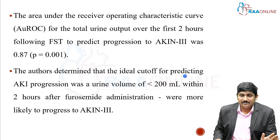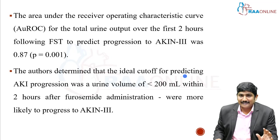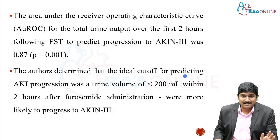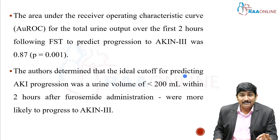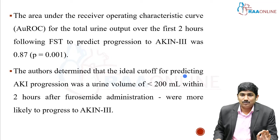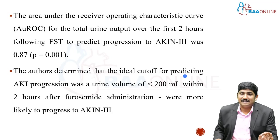In practice: when you identify AKI — in the ER, ward, or ICU — and want to know whether the nephron units are intact, perform the FST with adequate hydration. If the patient has not received furosemide in the past seven days, give 1 mg/kg IV bolus; if they have, give 1.5 mg/kg IV bolus. Ensure the patient is catheterized and monitor urine output. Less than 200 ml in two hours = FST non-responsive; more than 200 ml = FST responsive.